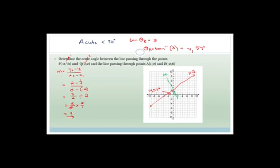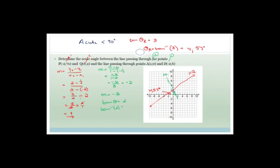Now we're going to do exactly the same thing but for the green line. We first have to work out our gradient: Y2 minus Y1 over X2 minus X1. I'm going to call this point 2 and this point 1. So it's Y2 = 0 minus 6 over X2 = 1 minus minus 2, which becomes minus 6 over 3, which is minus 2. So M = minus 2. We need tan theta = minus 2, but it's better to use 2 and find the acute angle. So we take arctan(2).